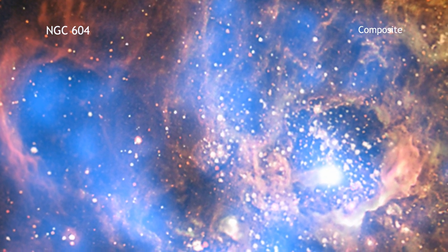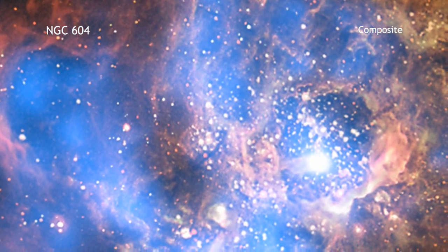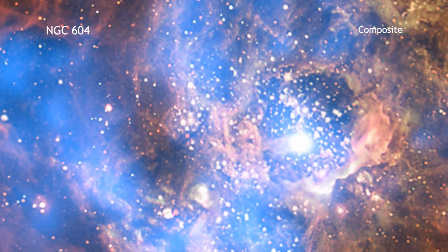NGC 604 is a divided neighborhood in the galaxy M33, where some 200 hot, young, massive stars reside.